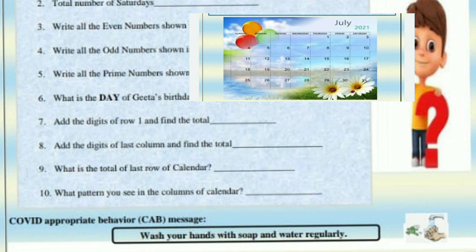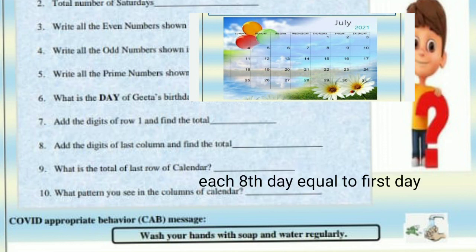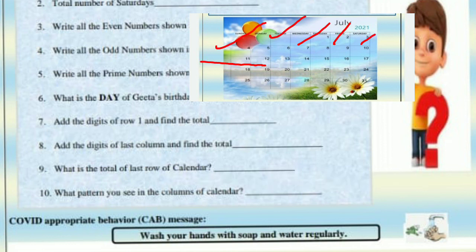Tenth: what pattern do you see in the column of the calendar? The eighth day equals the first day. For example, in the calendar: 4, 5, 6, 7, 8, 9, 10, 11 — the 4th and the 11th are both Sunday. So each eighth day equals the first day.